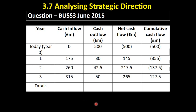The only totals we need to work out are the cash inflows and the cash outflows. When we add together cash inflows and outflows, the project earned 750 million in inflows and outflows of 622 million. So the cash outflows included the 500 million initial investment, and the inflows are all the money coming in. We can see that the inflows outweigh the outflows — so that's a good sign; we know it's going to be profitable.